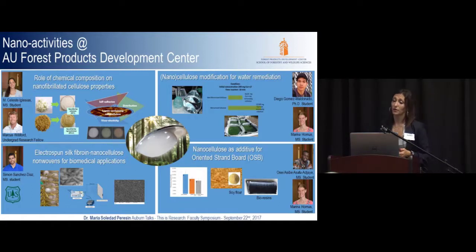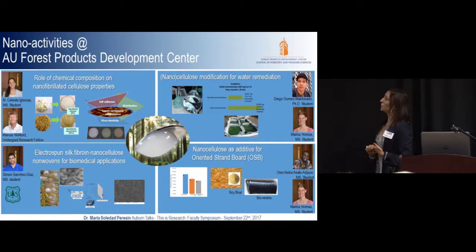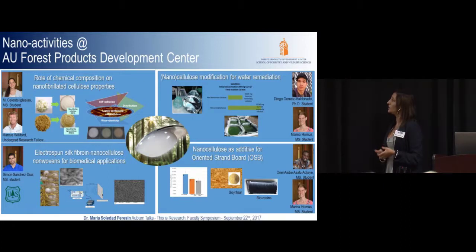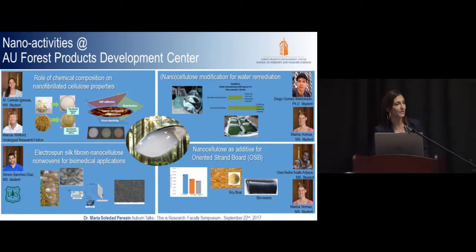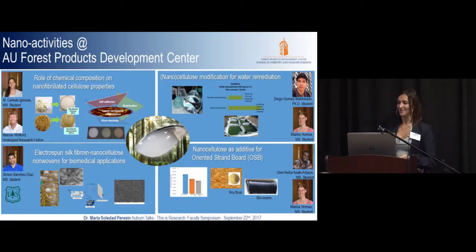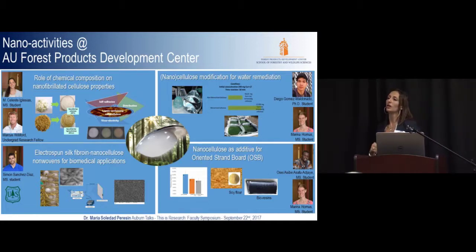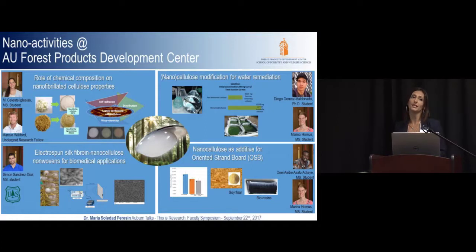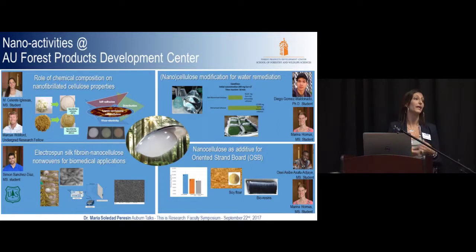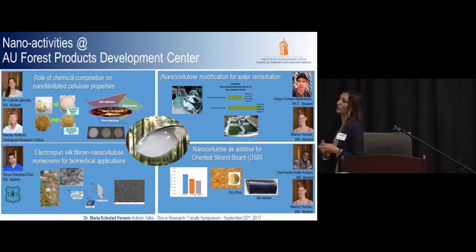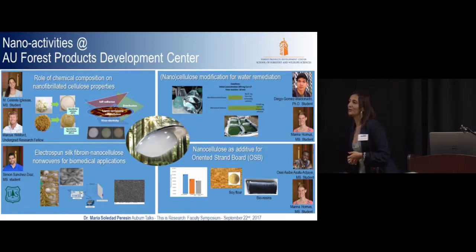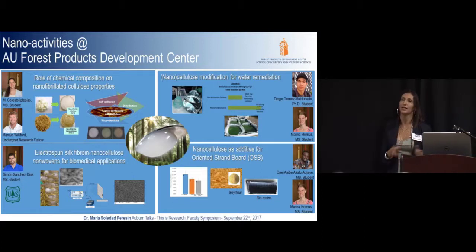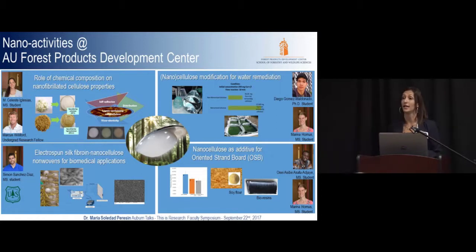Last but not least, we are using nanocellulose to strengthen Oriented Strand Boards (OSBs). This is a project with the director of the Forest Product Development Center, Dr. Vaya. We are using nanocellulose not only to improve the strength of the boards, but also to decrease water susceptibility in wet environments — for example, when soy flour is used as a binder. We are really transitioning to bio-based boards and trying to eliminate the hazardous chemicals and resins currently used in the board industry.